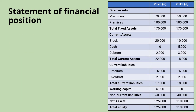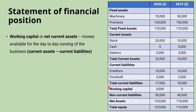Now we've seen the different types of assets and liabilities on the balance sheet, we can look at some of the slightly more complex figures. Working capital — sometimes called net current assets — is money available for the day-to-day running of the business. The calculation is current assets minus current liabilities. Using the 2020 figures, total current assets of £22,000 minus current liabilities of £17,000 gives working capital of £5,000.